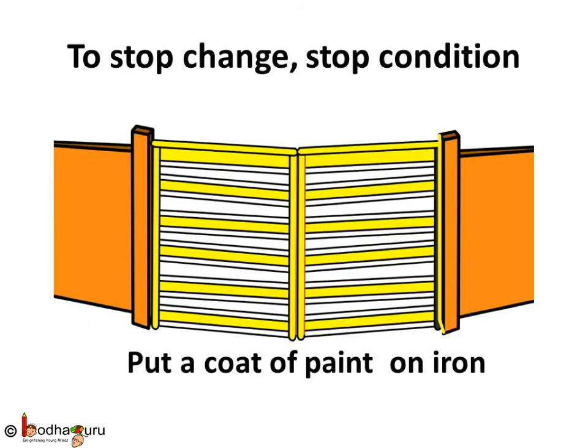If the content of moisture in the air is high — which means if it is more humid — the rusting becomes faster. You must have understood why rusting is more common near coastal areas, because it is humid. To stop or prevent undesired changes, we need to stop the condition which makes the change. Like, we can put a layer of something on iron so that it does not come in contact with air and doesn't get rusted.